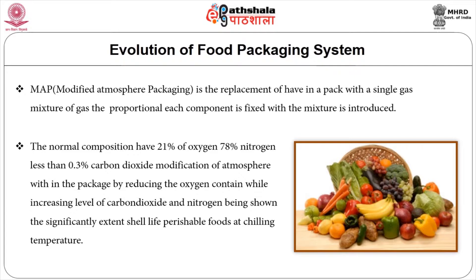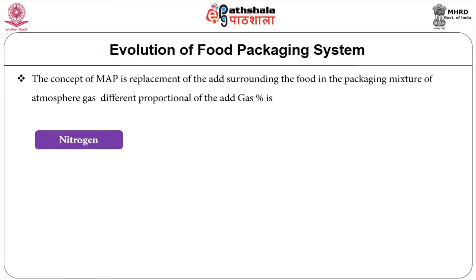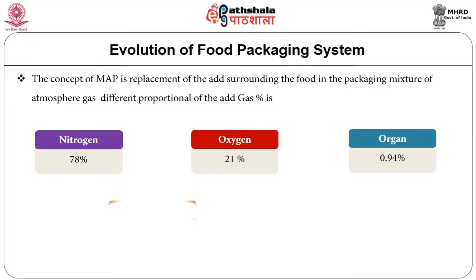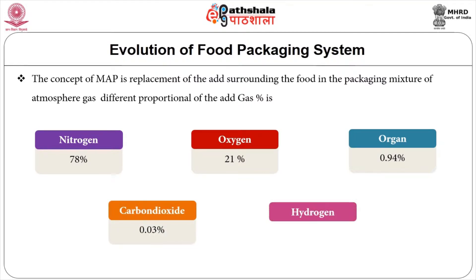The basic concept of MAP for fresh food is the replacement of the air surrounding the food in the packaging with a mixture of atmospheric gases different in proportion from that of air. The full gas percentage composition is: nitrogen 78 percent, oxygen 21 percent, argon 0.94 percent, carbon dioxide 0.03 percent, and hydrogen 0.01 percent.